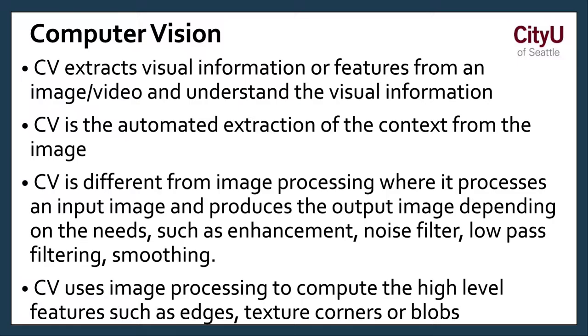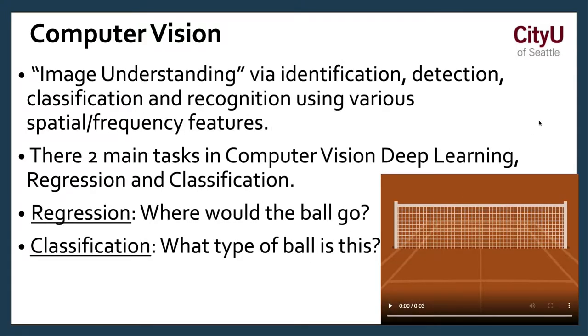There's a lot of features that can be grabbed upon like edges, textures, corners or blobs. You would use a lot of filtering and smoothing to basically define the features and then now the computer vision can make predictions. It processes an input image and produces output image depending on the needs. The image understanding requires to identify, detect, classify and recognize various spatial frequencies and features of an object or element.